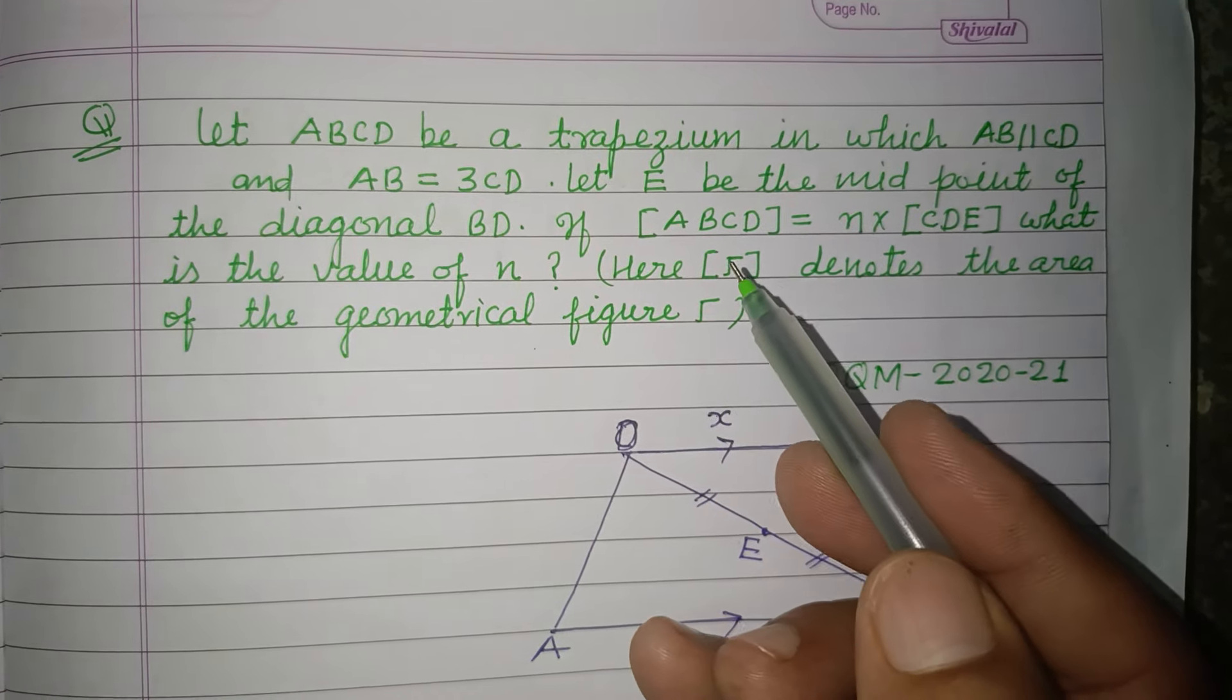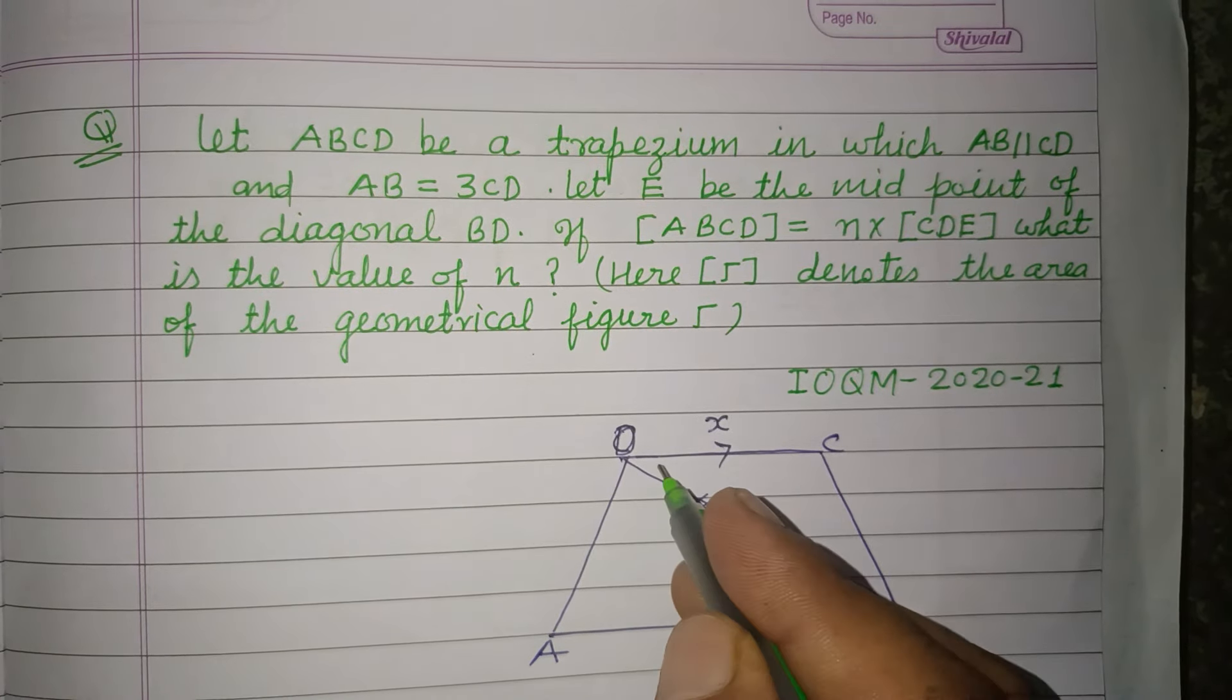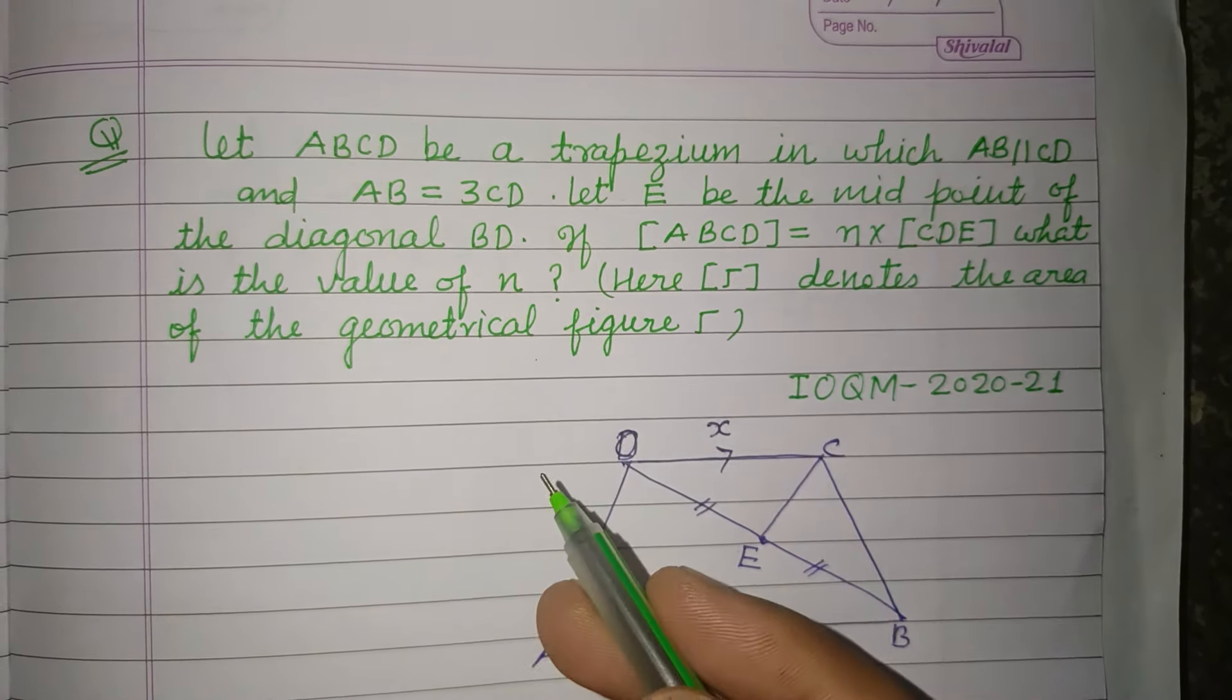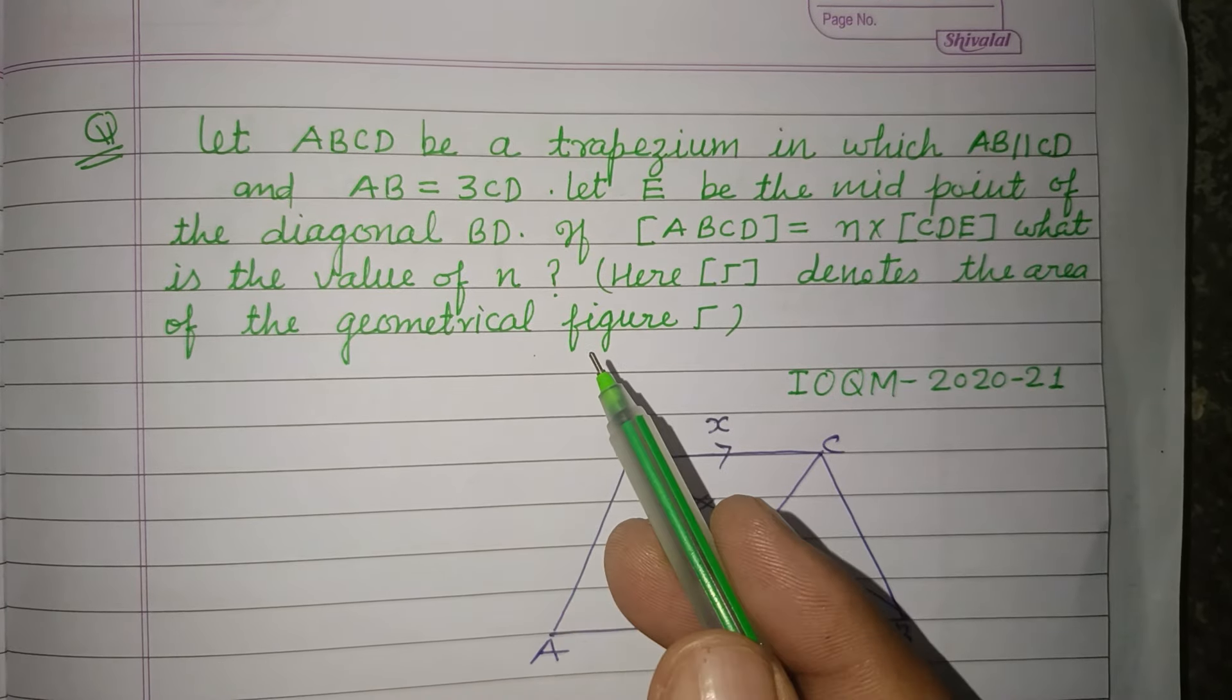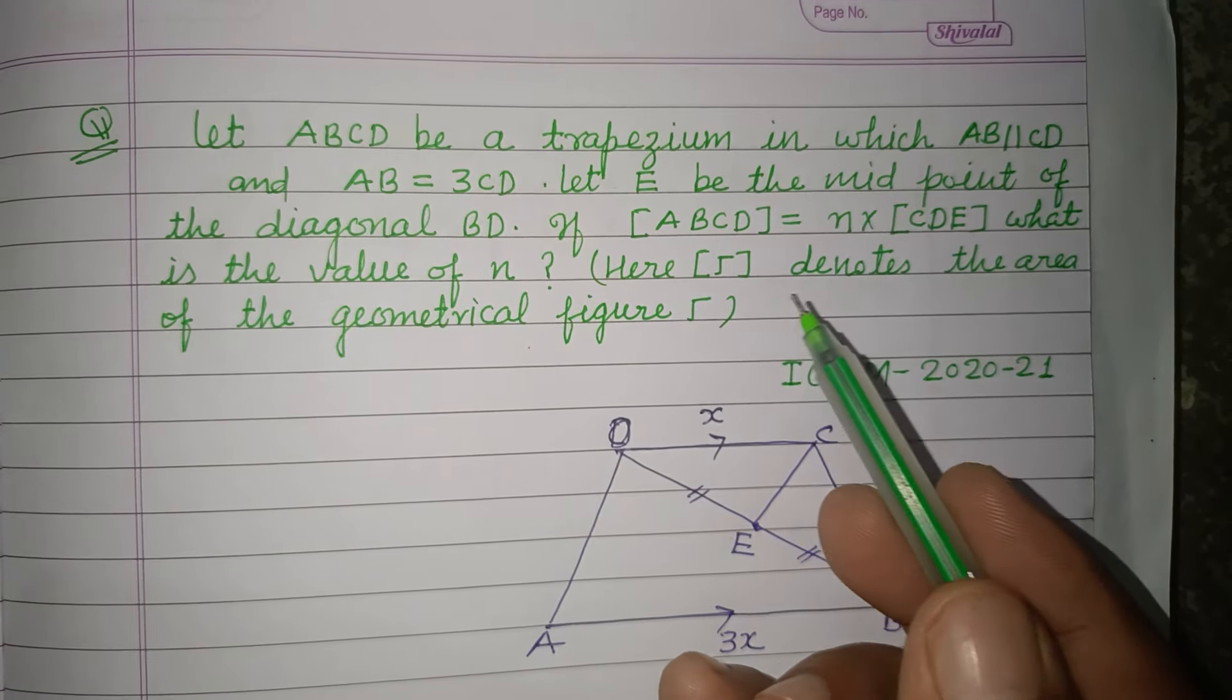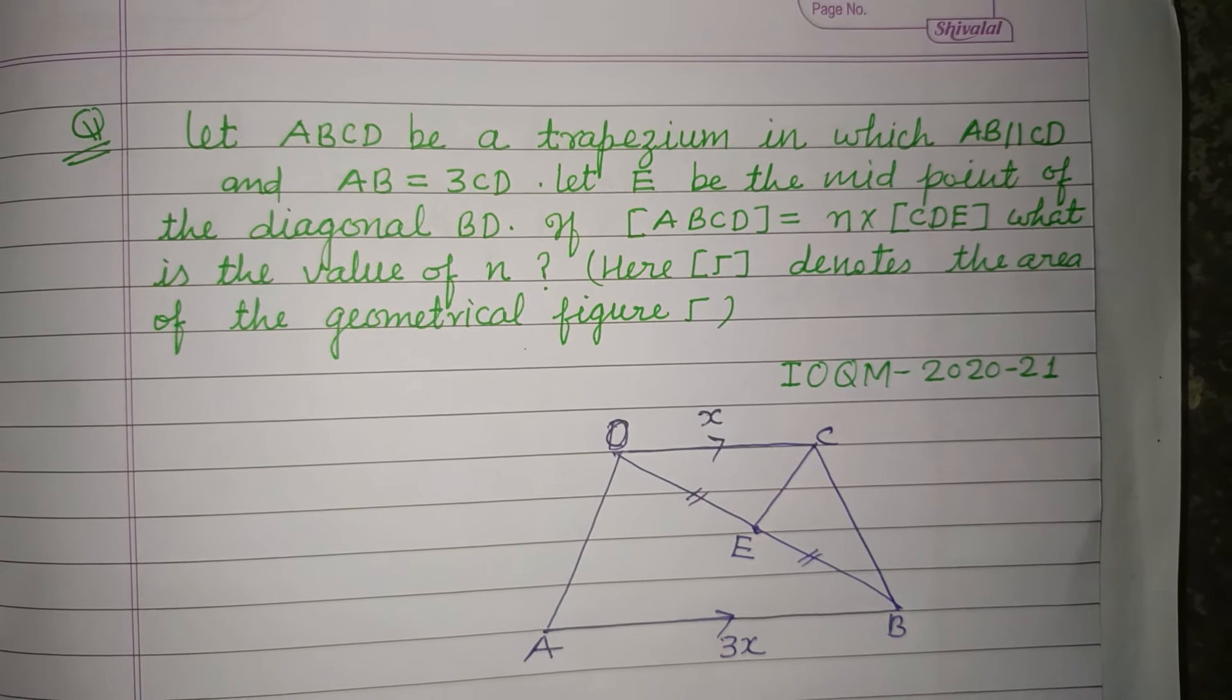And area of trapezium ABCD is n times area of CDE. What is the value of n here? This bracket denotes the area of the geometrical figure.